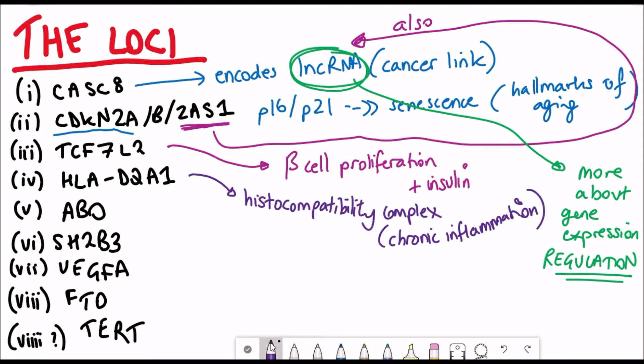Then the fifth loci is ABO, which is the loci that encodes the different antigens that determine your blood group. And so, so far, one of the O antigens seems to be the variant associated most with longevity. Unfortunately, it's not my blood type.